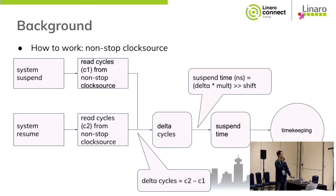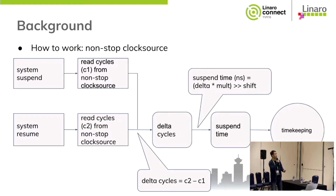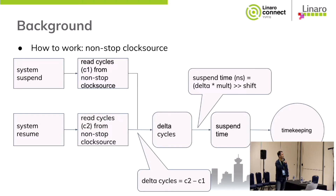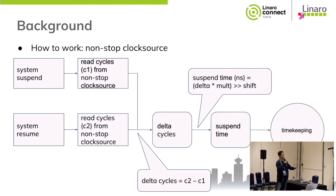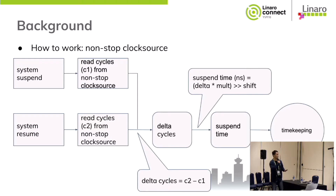Let's see how the non-stop clock source works. When the system starts to suspend, in the timekeeping suspend function, we will read the current cycles from the non-stop clock source — we name it C1. Then the system suspends. When the system starts to resume, in the timekeeping resume function, we will read the current cycles from the non-stop clock source again — we name it C2. So now we can get a delta cycle by C2 minus C1, and we can convert the delta cycles to suspend time by this formula. The last step, we inject the suspended time into the timekeeping, so now the timekeeping will show the correct system time.